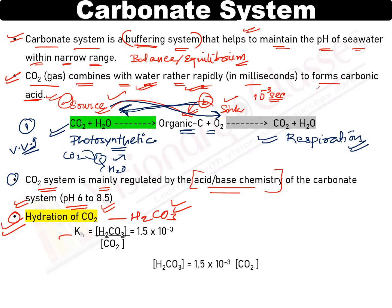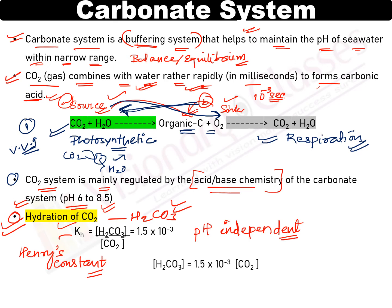We already discussed in the solubility of gases chapter that Henry's law has been studied. Henry's constant is pH independent — meaning pH change will not affect it. The value of Henry's constant gives us: concentration of bicarbonate upon carbon dioxide equals 1.5 × 10⁻³. Through Henry's constant, based on the concentration of CO2, we can find out the concentration of bicarbonate. Bicarbonate concentration is very important from the examination point of view.